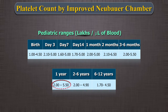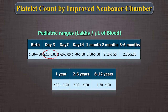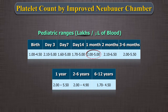The pediatric reference ranges are as follows: 1 year: 2.0 to 5.50; 2 to 6 years: 2.0 to 4.90; 6 to 12 years: 1.70 to 4.50. At birth: 1.0 to 4.50; Day 3: 2.10 to 5.0; Day 7: 1.60 to 5.0; Day 14: 1.70 to 5.0; 1 month: 2.0 to 5.0; 2 months: 2.10 to 6.50; 3 to 6 months: 2.0 to 5.50.